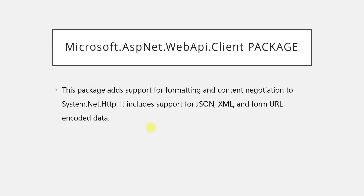The most important thing is that if you want to use the HttpClient class in your application, you have to install a specific package first. This package supports formatting, content negotiation, and provides support for JSON, XML, and form URL-encoded data. So when we start the practical portion, the first step is to install this package — only then can you use the HttpClient class in your application.